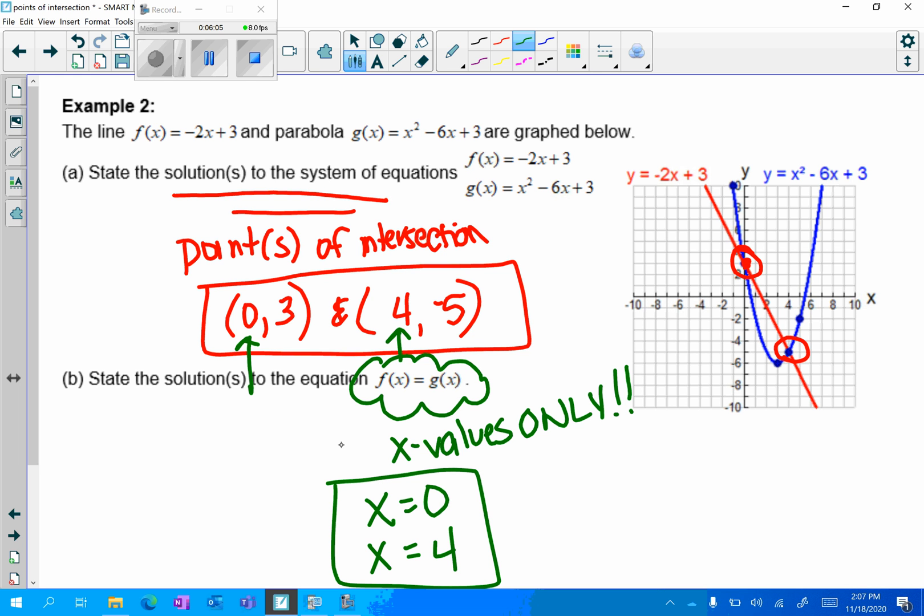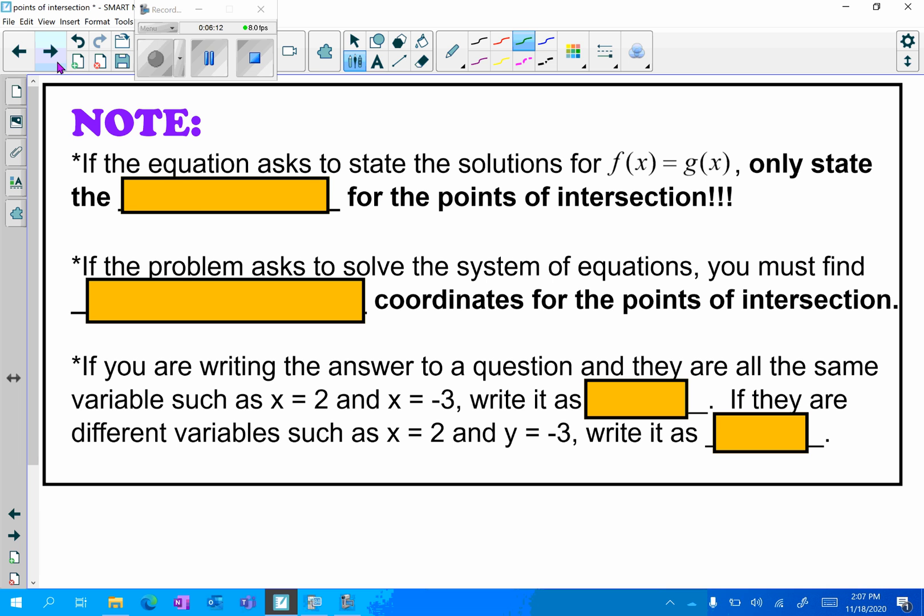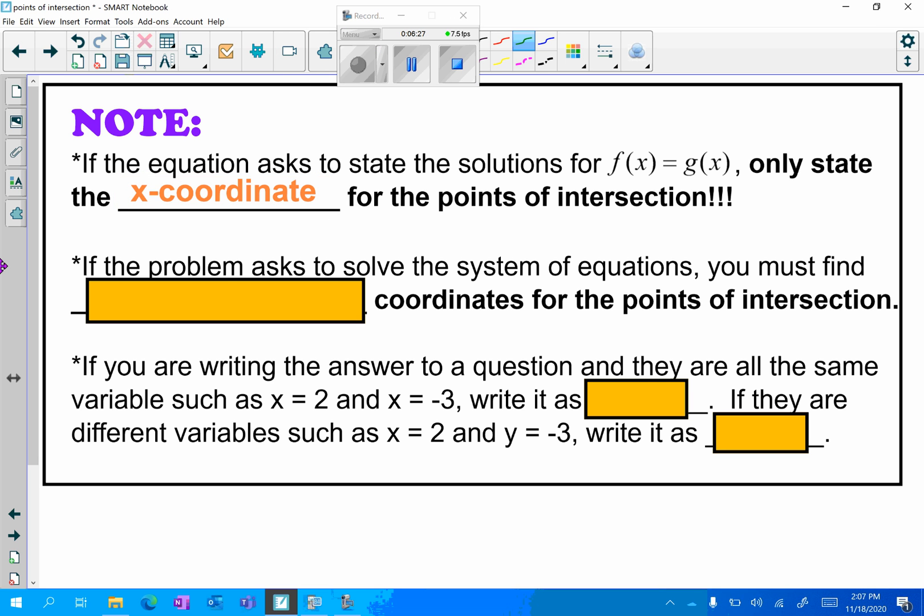Please make sure solution to a system is a point x comma y, solution to f of x equals g of x is just the x value, and that's true whether you are solving graphically or algebraically. At the bottom you should have your notes to just fill in the blanks and summarize what I just went over with you. If the equation asks to state the solution for f of x equals g of x, only state the x values for the points of intersection. If the problem asks to solve the system of equations, you must find the point of intersection - so I'm looking for both the x and the y coordinates of the point of intersection.